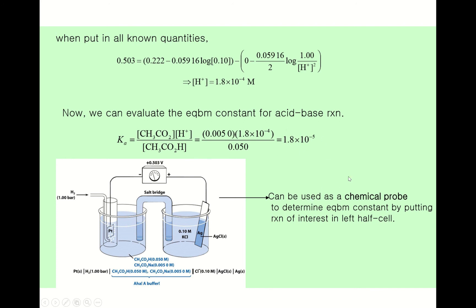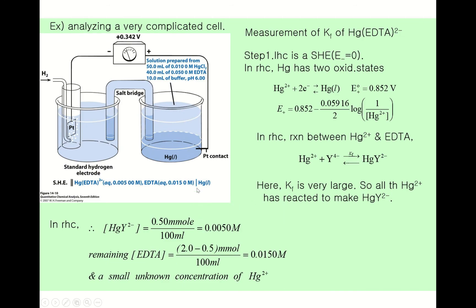This is exactly the same as the tabulated value. By constructing this simple electrochemical cell, we can calculate the equilibrium constant of acetic acid. In other words, the electrochemical cell serves as a chemical probe to determine equilibrium constants by placing the reaction of interest in the left-hand cell. The next example is more complicated.